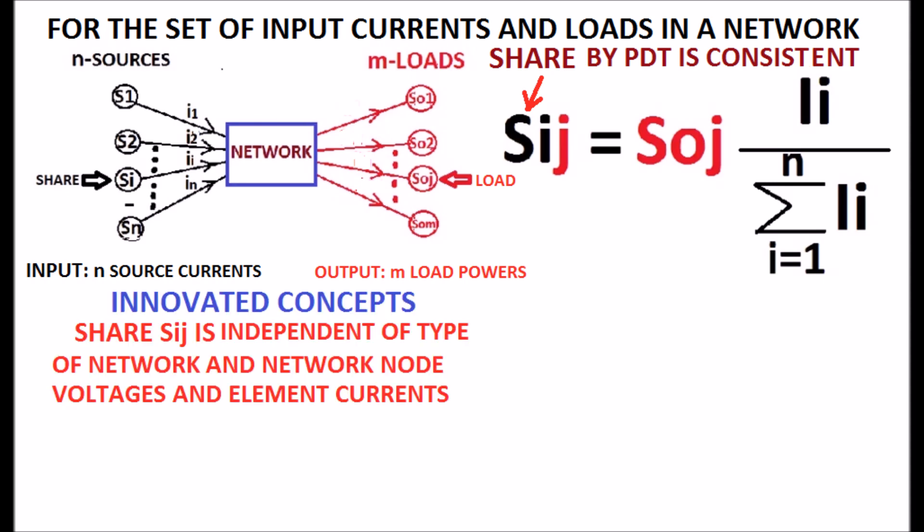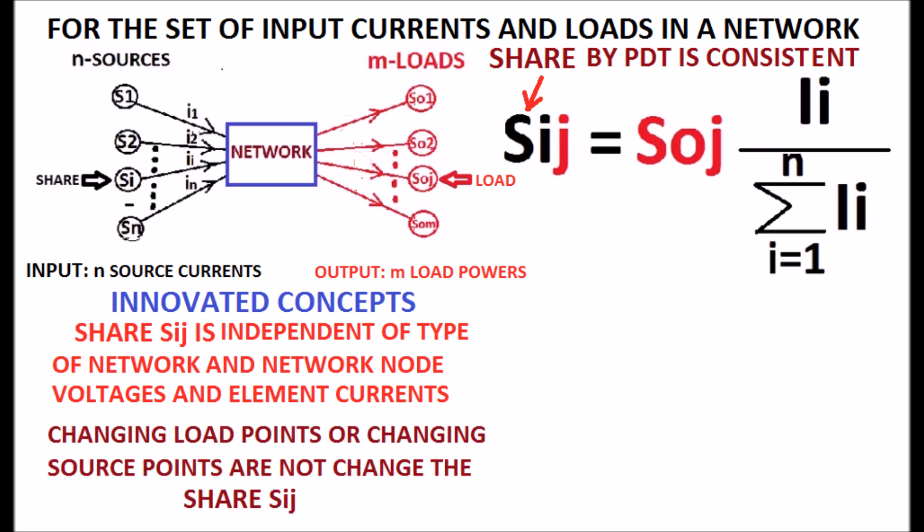The share of the i-th source to the j-th load, Sij, is independent of the type of network, network node voltages, and element currents. Also, changing load points or changing source points does not change the share Sij.